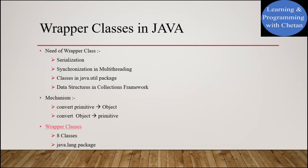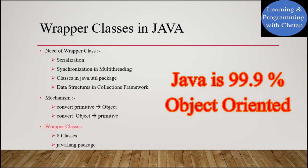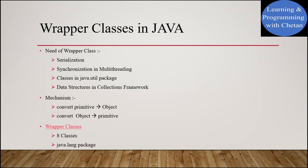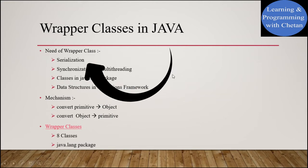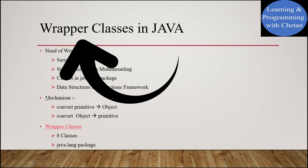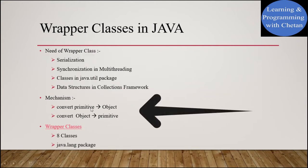As we all know, Java is an object-oriented programming language, which means that for performing all the operations in Java we need objects. But Java is 99.9% object-oriented, and that 0.1% is because of the primitive data types. So we need a certain mechanism by the help of which we can easily convert primitives into objects and objects into primitives. That mechanism is the Wrapper classes.